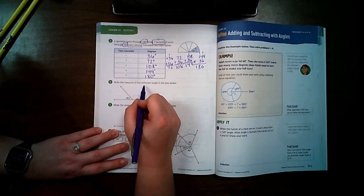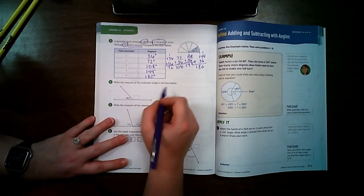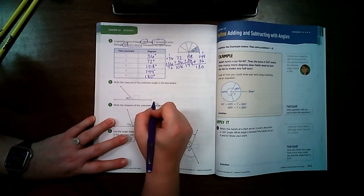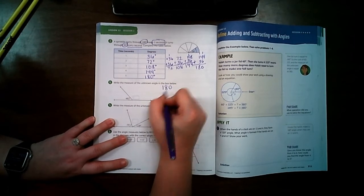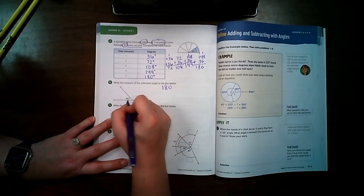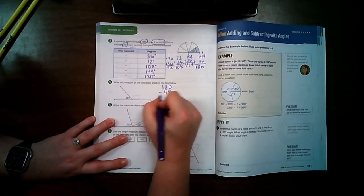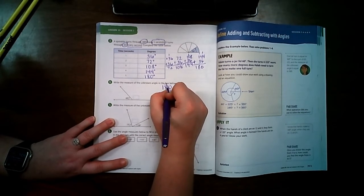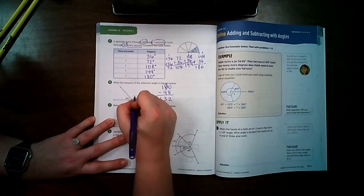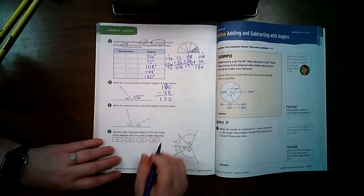Write the measure of the unknown angle in the box below. Well I know that this line total is worth 180, and if I know this which is 48 degrees, I can subtract that. So that means this angle is 132 degrees.